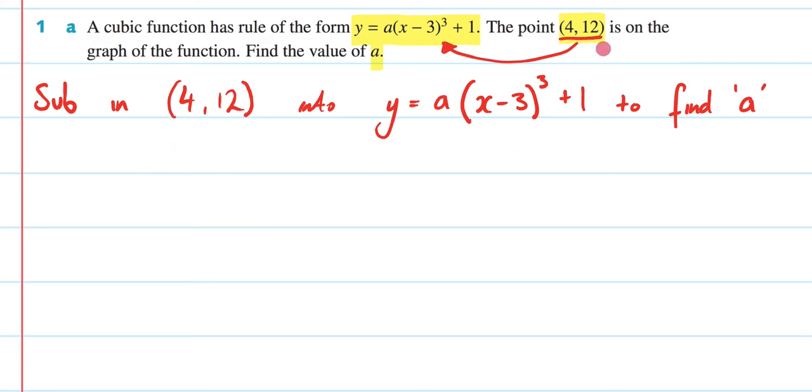So I'm going to begin by putting 12 in my y spot, which is going to be 12 equals, then I have a. Instead of x, I'm going to put in 4. 4 minus 3. All of this is going to be cubed, and then I'm going to plus 1.